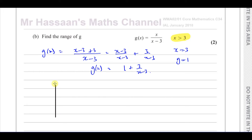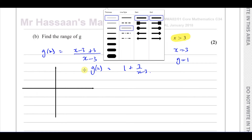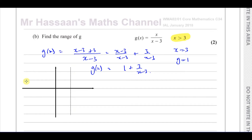So if we sketch this function — which is always a good idea — we have an asymptote at x equals 3 and an asymptote at y equals 1. With a positive 1 over (x minus 3), it's going to go something like this. On the left side, when x equals 0, you get y equals 0, so it goes through the origin.